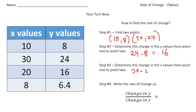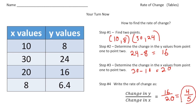Writing the rate as a ratio: the change in y is 16, the change in x is 20. I can reduce that by dividing both by 4 — 16 divided by 4 is 4, and 20 divided by 4 is 5. So our rate of change is 4 fifths. How'd you do?